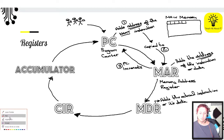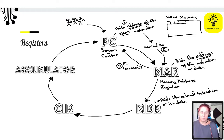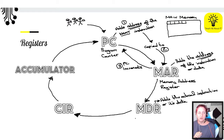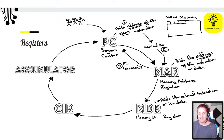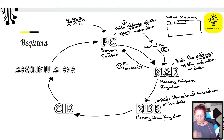What does MDR stand for? We've got a hint from the MAR. Think about what it's actually holding. It is the Memory Data Register — though if you're doing AQA, they call it MBR, the Memory Buffer Register. A buffer acts as a temporary holding place, like when YouTube buffers a video — it downloads enough data to play smoothly. The Memory Buffer Register is exactly that: a temporary holding place for data or an instruction until we can actually do something with it.